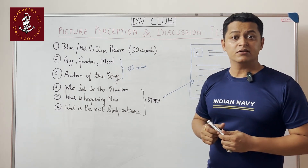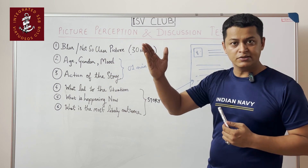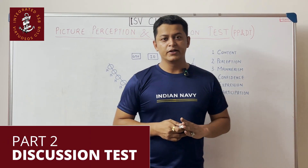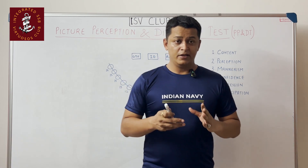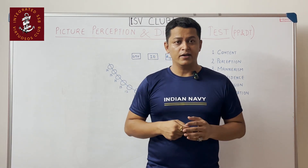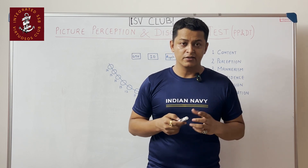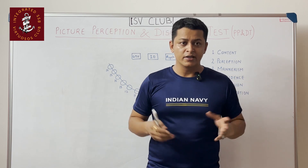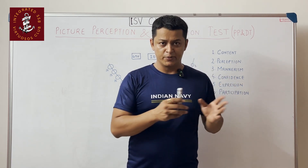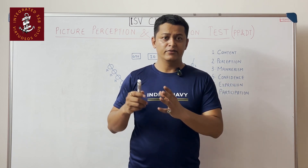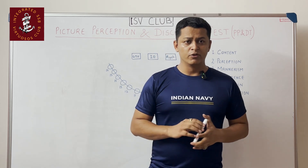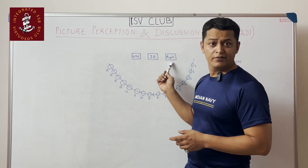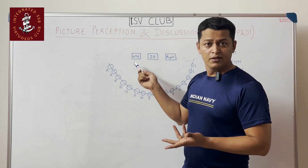The second part of the PPDT is the Discussion Test. When you entered the SSB center, test numbers were assigned. Freshers are grouped together, and screened-outs and repeaters can be kept together for the discussion test. You will be made to sit in a semicircle, and three assessors will observe you — the Group Testing Officer, the Interviewing Officer, and the Psychologist — who will assess you live as a board.